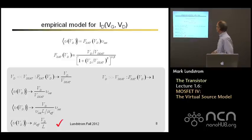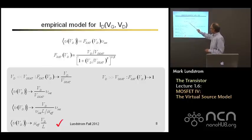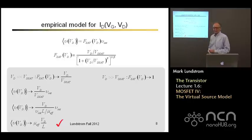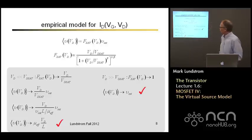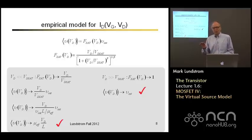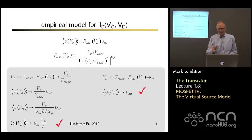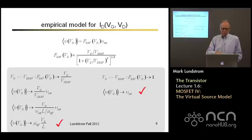For large drain voltage, we can ignore the one in the denominator. Then the beta to the power one over beta will just give us one, and the saturation function will approach one. The average velocity is then just Vsat — exactly what it's supposed to be under high drain bias. So this empirical saturation function has the right value at both limits. The empirical parameter beta, which is typically 1.5 to 2 or so, controls the transition between the two regimes.